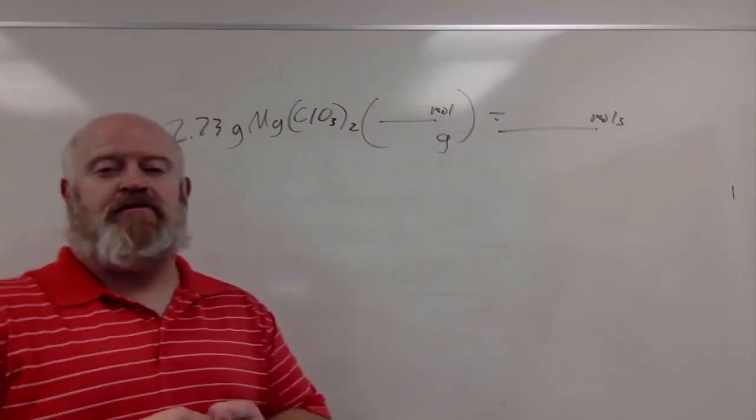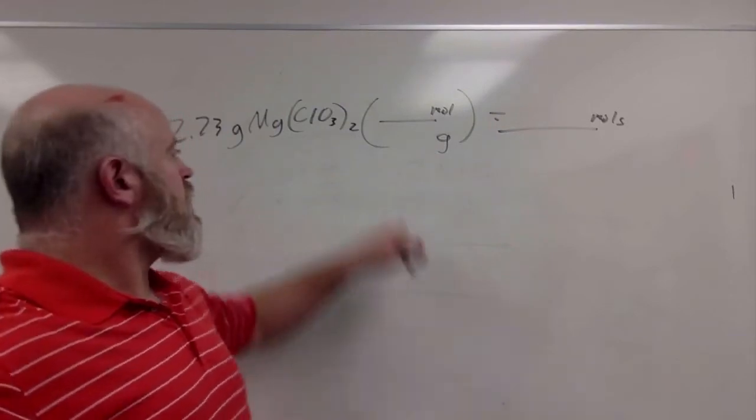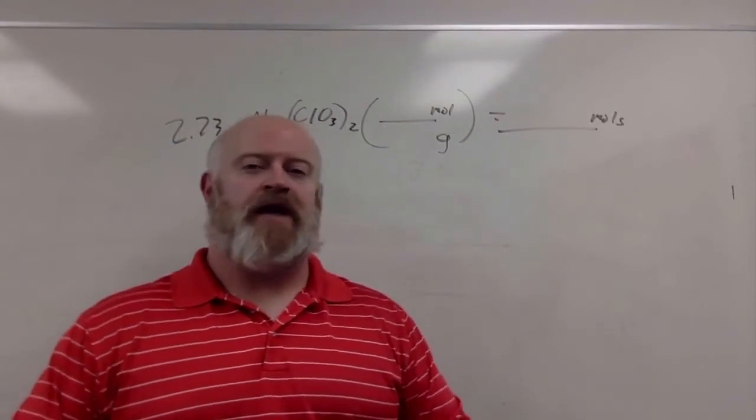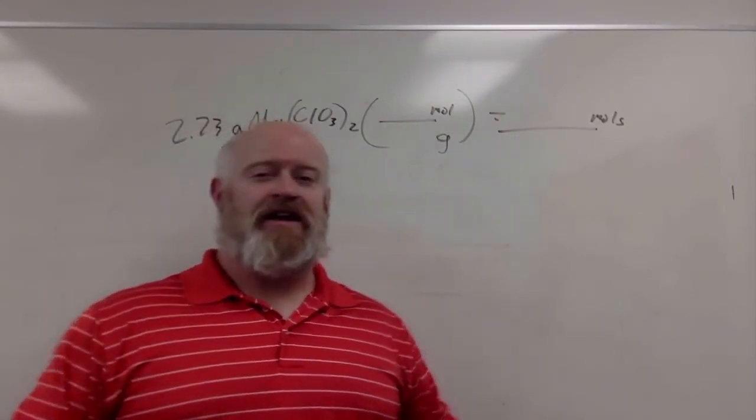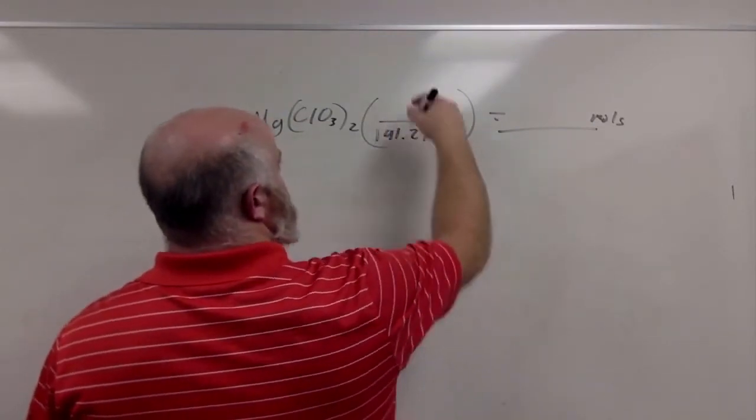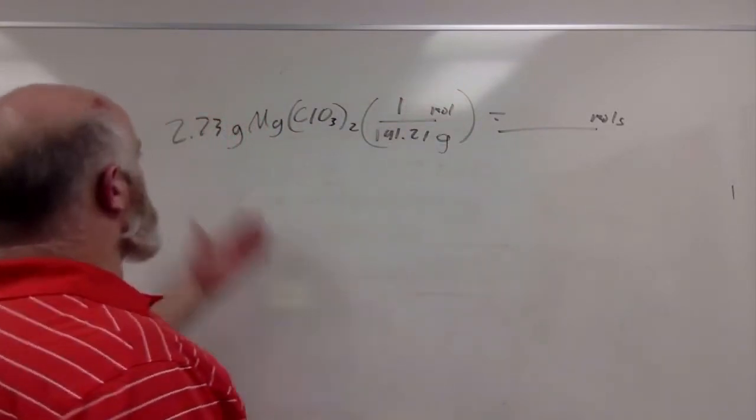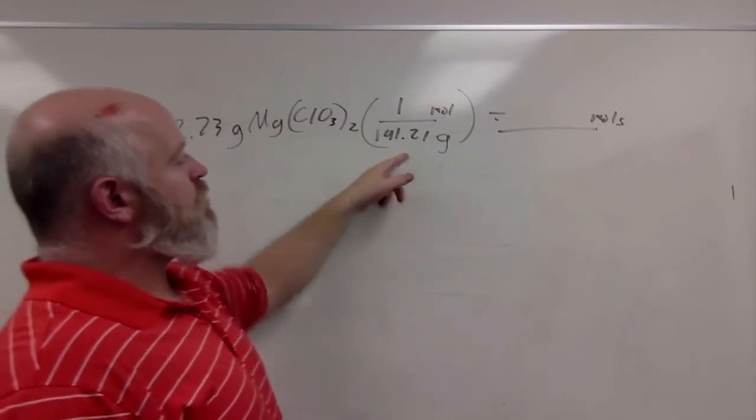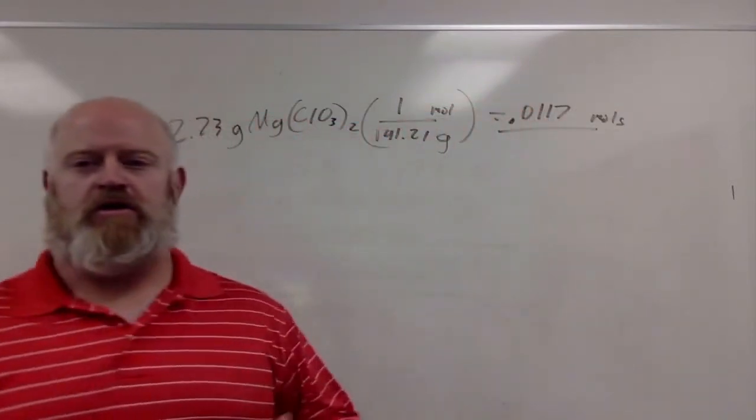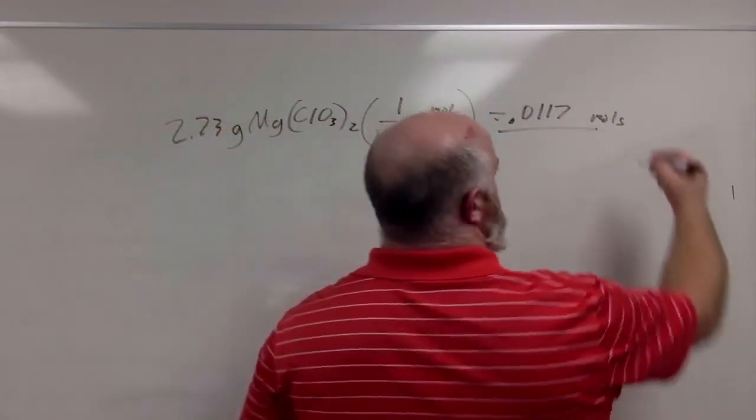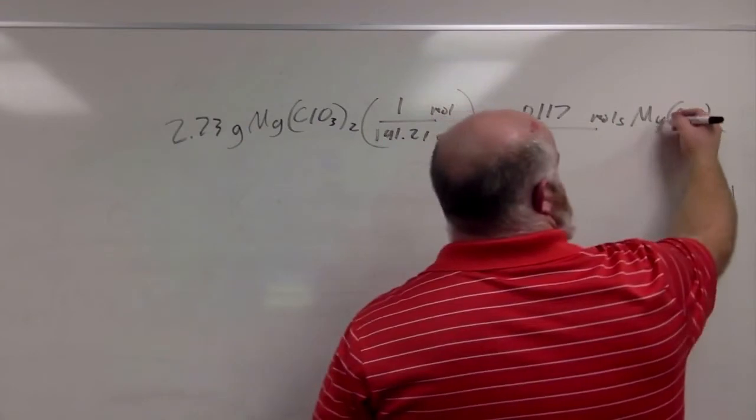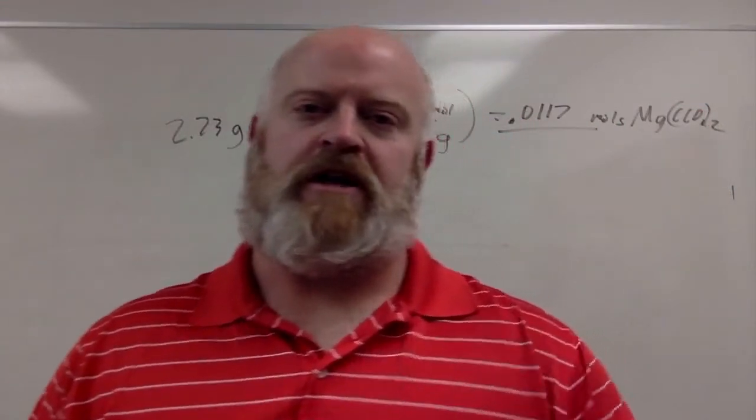When you solve for the molar mass of magnesium chlorate, we're going to put the grams on the bottom and the moles on the top, so we flip it. I'm not going to go through all the math again for molar mass. Magnesium chlorate is 191.21 grams per mole. You have 2.23 grams, divide by 191.21, and you get 0.0117 moles of magnesium chlorate. We check the screen and it worked out there also.